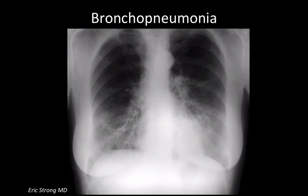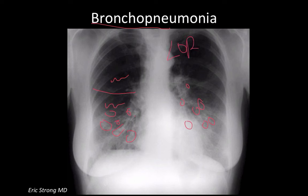Another type of pneumonia is bronchopneumonia, where you get patchy infiltrates that fill up the space around the airways but don't follow a lobar distribution. Part of the lower lung field is free, as well as part of the upper lung field. The infiltrates look patchy and usually run along the bronchial tree but don't cause complete bronchial opacification. Unless the person has lobar pneumonia — in which case streptococcal pneumonia is more likely — the differential for bronchopneumonia is very broad.